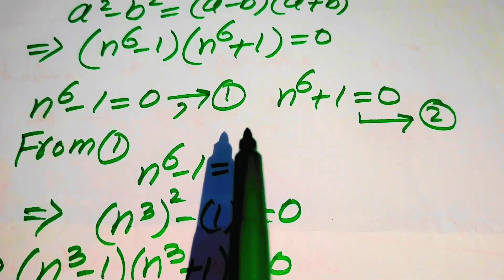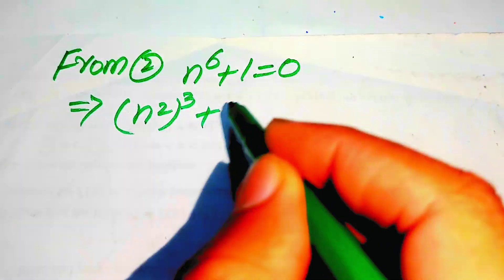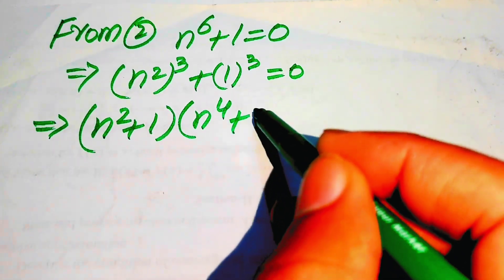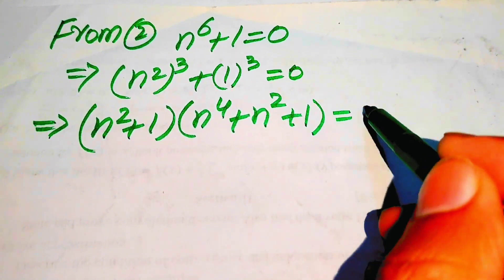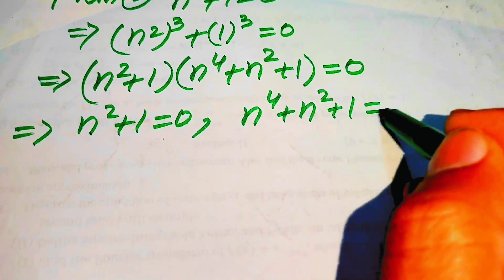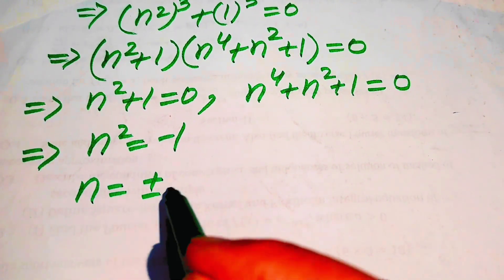Now we move to case number 2: n to the power of 6 plus 1 equals to 0. We rewrite this as n squared whole cubed plus 1 cubed equals to 0, and apply the sum of cubes formula to get n squared plus 1 times n to the power of 4 plus n squared plus 1 equals to 0. We divide into two cases: n squared plus 1 equals to 0, and n to the power of 4 plus n squared plus 1 equals to 0. From the first case, n squared equals minus 1, giving n equals plus or minus iota — two more complex roots.